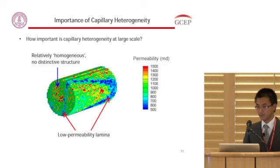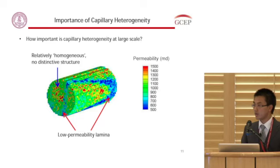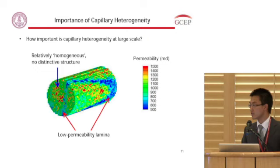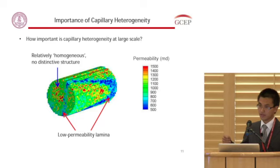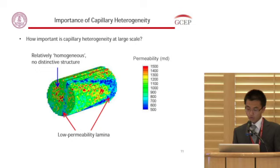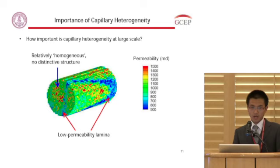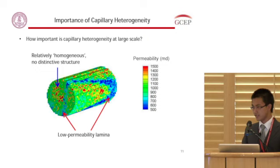Looking at the permeability distribution inside this particular rock, we notice a low permeability lamina running through the core. Our intuition tells us this low permeability lamina may be a flow barrier for CO2, significantly affecting fluid migration — and this is indeed the case, with experimental results and literature supporting this. However, in the remaining region of the core, although we do see heterogeneities, they appear relatively homogeneous and do not form any distinctive structure. Our intuition initially suggests this relatively homogeneous heterogeneity may have very limited impact on fluid migration. However, this is not necessarily the case.